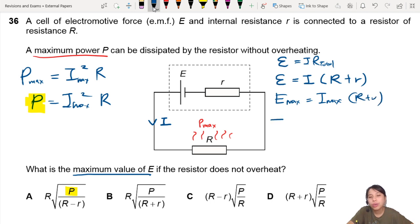So rearrange I maximum. Maximum current due to maximum EMF will be E over R plus r.